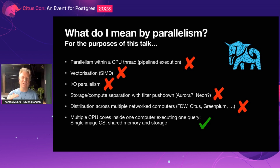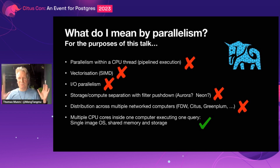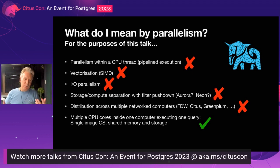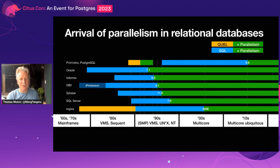I should clarify what I'm talking about with parallelism. There are many different levels — single-thread CPU, vectorization, IO parallelism, and networking loads of computers together. Citus is a great example of that, and there's also the built-in FDW system. I'm not talking about any of that. I'm talking about a single machine with a lot of CPU cores — possibly one or two sockets or more — and how we make use of those.